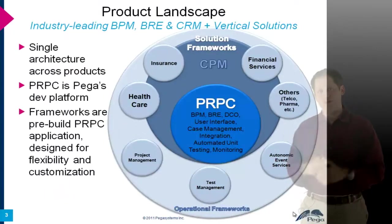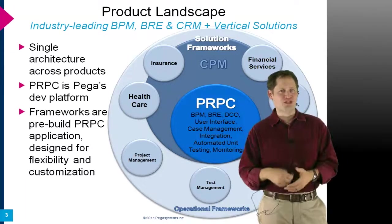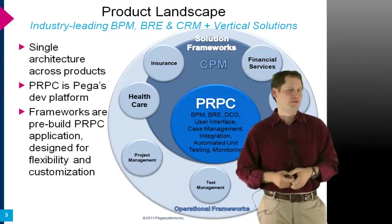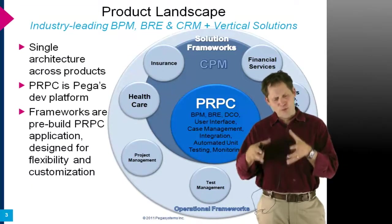PEGA goes to market in a couple of different ways. The first is with the core product called PRPC, which stands for PEGA Rules Process Commander — also called PEGA rules, PEGA BPM, or simply PEGA. That's the core engine that does business process management, business rules, user experience, case management, and integration. It includes the whole design environment representing what we call Directly Capture Objectives, or DCO. That's our core product.